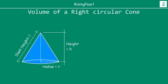Now let's go back to right circular cone. The two most important dimensions that we absolutely need to know are the radius, which is the radius of the base circle, and the height, which is the height of the cone from the base to the very top. If we know h and r, we can find out the volume of a right circular cone.